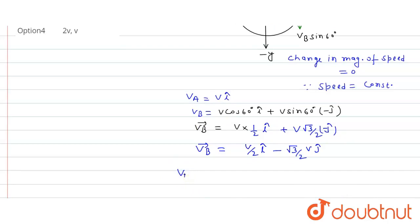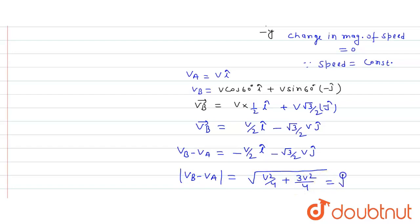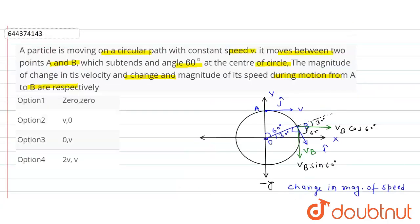So Δv = v_B − v_A = (v/2)î − (√3v/2)ĵ − vî = −(v/2)î − (√3v/2)ĵ. The magnitude of Δv = √(v²/4 + 3v²/4) = √(4v²/4) = √(v²) = v.